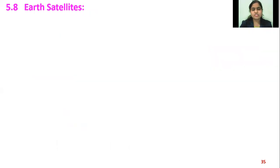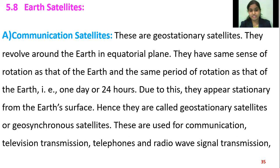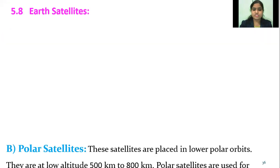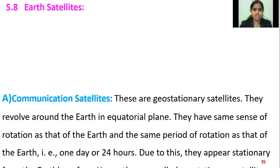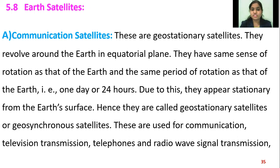Next is Earth's satellite. A satellite is an object which is revolving continuously about the Earth. We know that the Moon is the natural satellite of the Earth, revolving about the Earth in a circular orbit with a period of revolution equal to 27.3 days. For communication purposes, artificial satellites are launched. There are two types: one is the communication satellite and the other is the polar satellite. The communication type includes geostationary satellites.